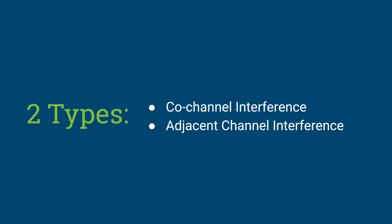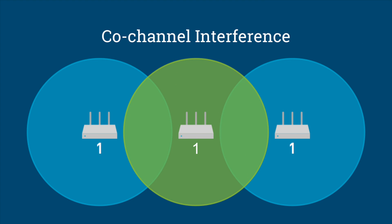There are two types of channel interference. The first is co-channel interference, which is when multiple access points are operating on the same channel. The access points must share the channel space, which slows down the network performance.